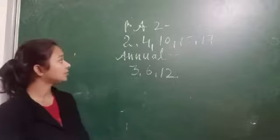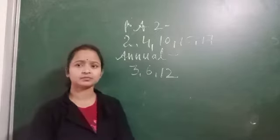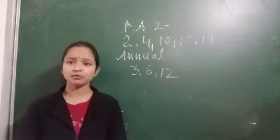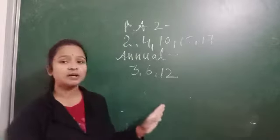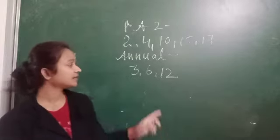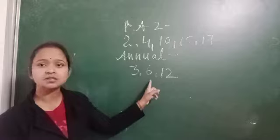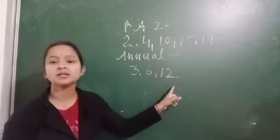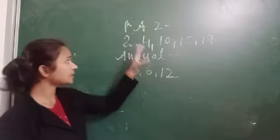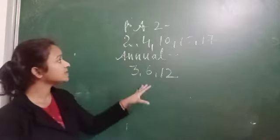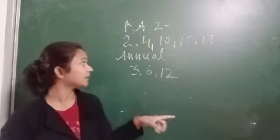So I will start with annual. In the annual examination, 3 chapters are there: Chapter 3, Chapter 6, Chapter 12. So in the annual examination, these 8 chapters will come.